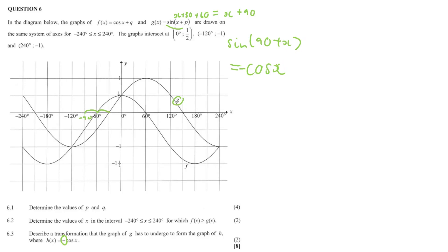And that's it for the question. 6.3 wasn't all that easy — we needed co-function understanding and shift understanding because we're manipulating it into the co-function to get cos x. Then, to get negative cos x, we reflect about the x-axis — that's a change in y. If we reflected about the y-axis, there would have been a change in x instead. Hope that makes sense.